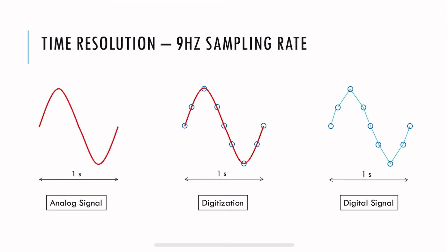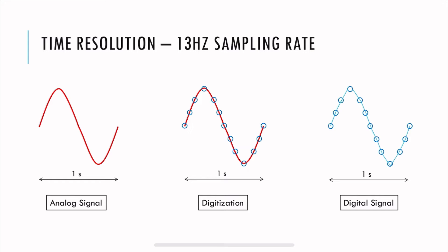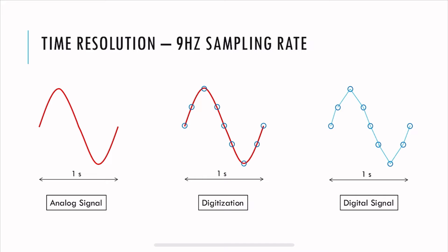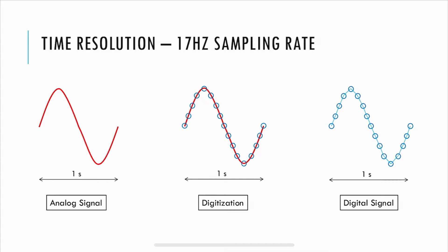Here's an example of different sampling rates. With a 9 Hz sampling rate, we acquire 9 data points per second. We get a digital signal by connecting those dots to reconstruct the signal. The digital signal is not an exact copy of the analog signal because the sampling rate is very low. If we increase to 13 Hz, it gets better, though still not accurate. At 17 Hz, it captures the analog signal quite well.